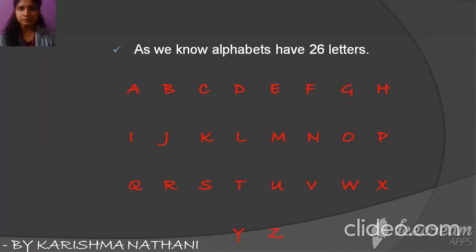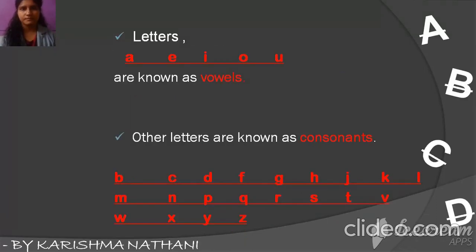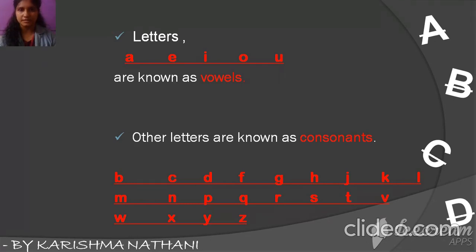As we know, alphabets have 26 letters, A to Z. Letters A, E, I, O, and U are known as vowels and the remaining letters are known as consonants.